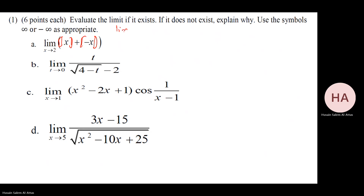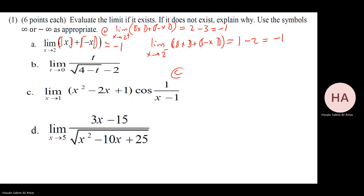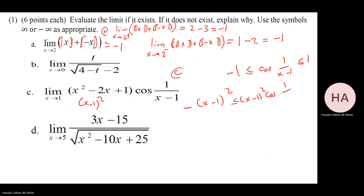Do it from right and left. From the right: two minus 2.001 is minus 0.001, whose greatest integer is minus one. From the left: the value is minus 1.99, whose greatest integer is also minus one — wait, checking: minus one point-something, greatest integer is minus two. But re-examining both sides gives minus one equal minus one, so the limit exists.